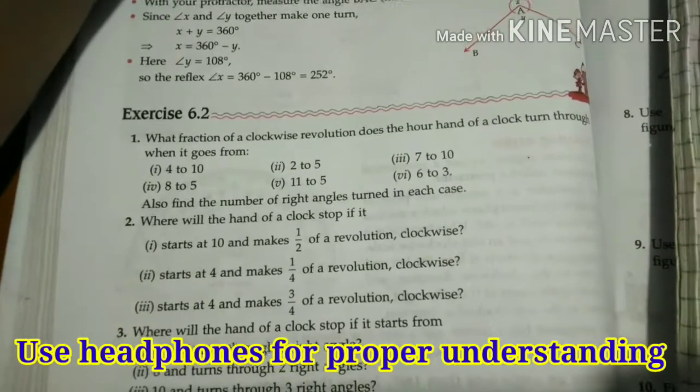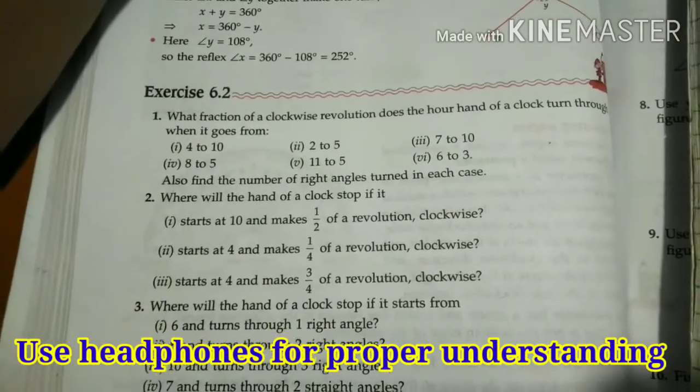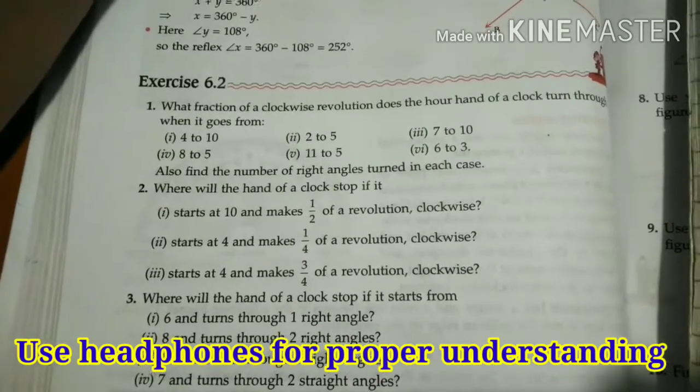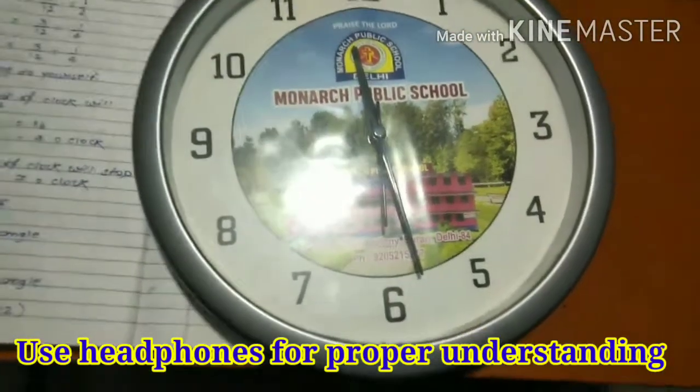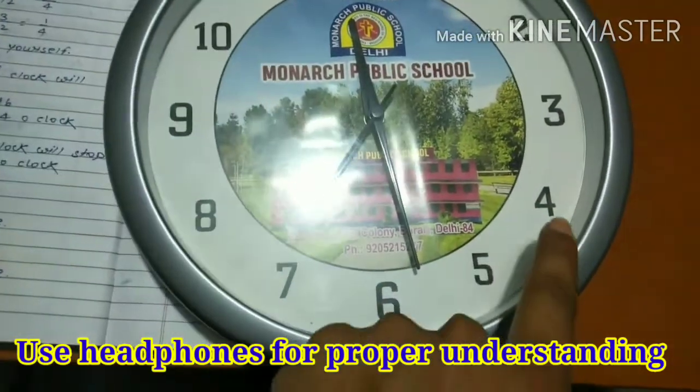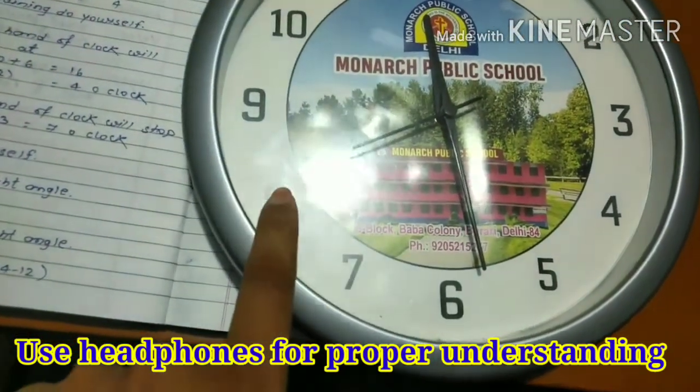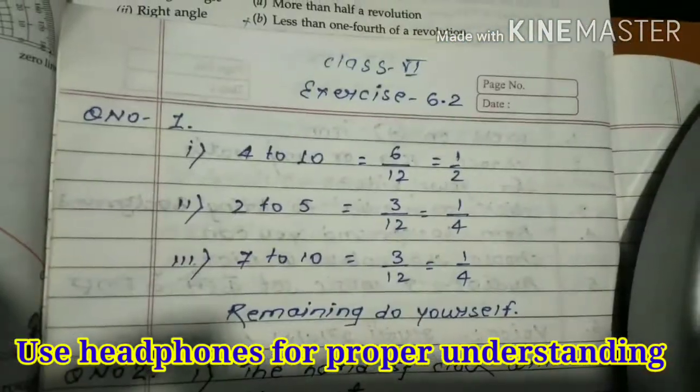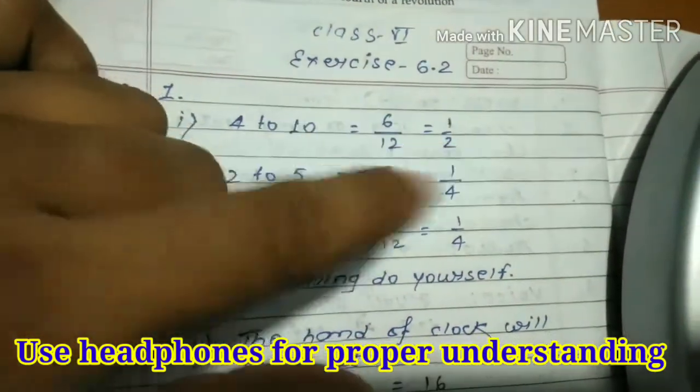The hour hand starts at 4. You can see here in my hand, counting 1, 2, 3, 4, 5, 6 - total 6 positions covered.